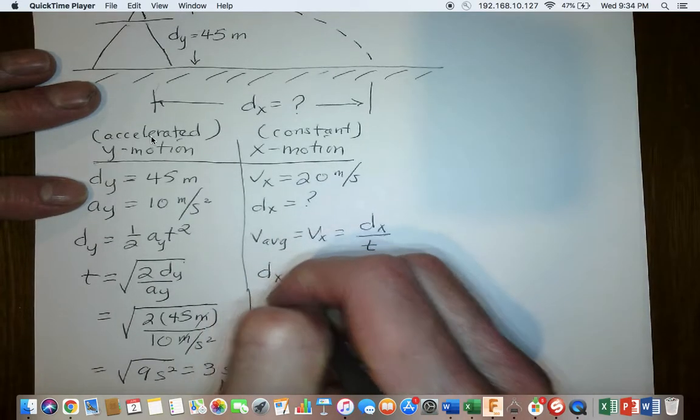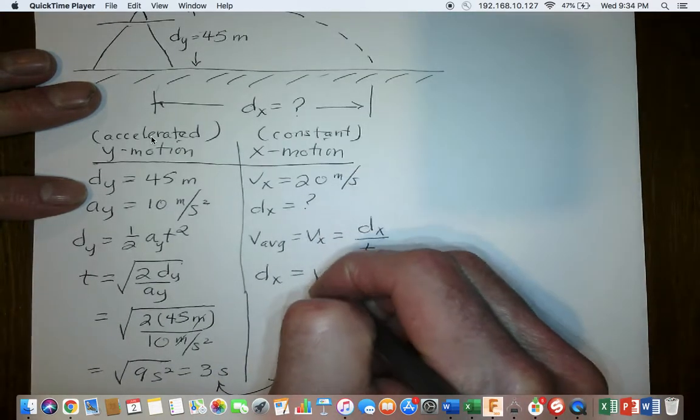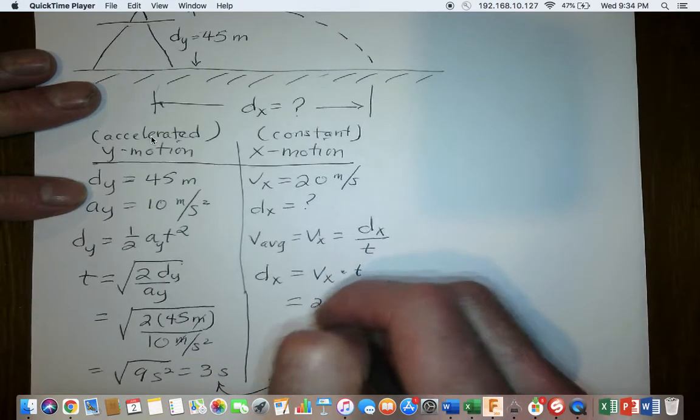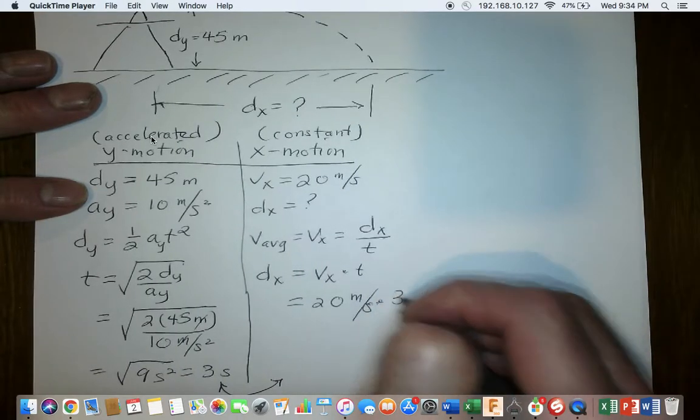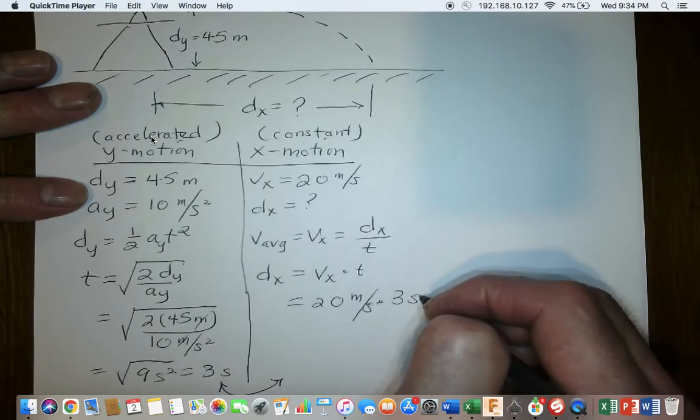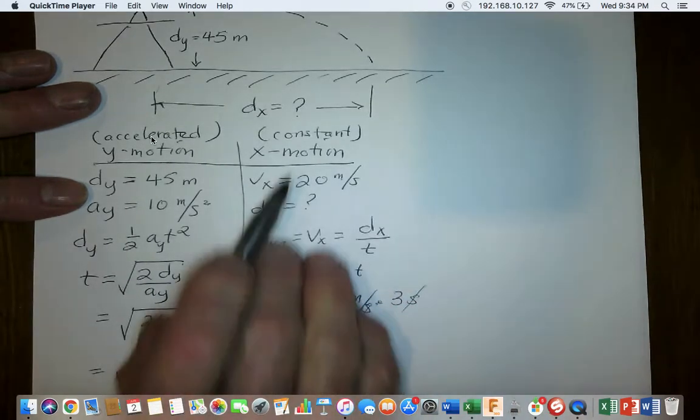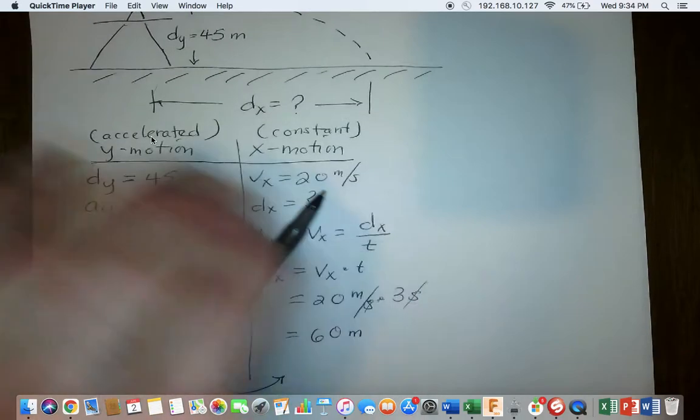I'm going to solve for the distance in the X direction simply by multiplying both sides by time, and you get VX times time. The velocity in the X direction is 20 meters per second times the time of 3 seconds. The seconds will cancel, and you'll be left with 60 meters, and that's the distance the ball goes in the X direction. Thank you for listening.